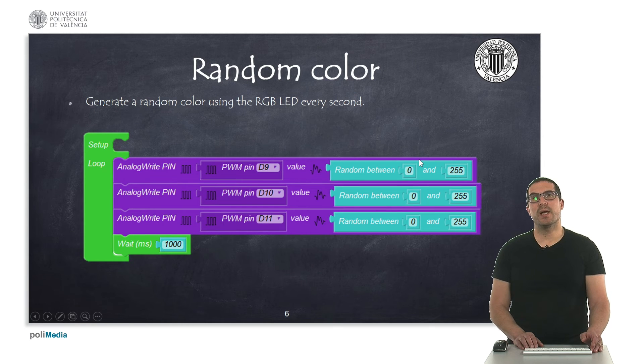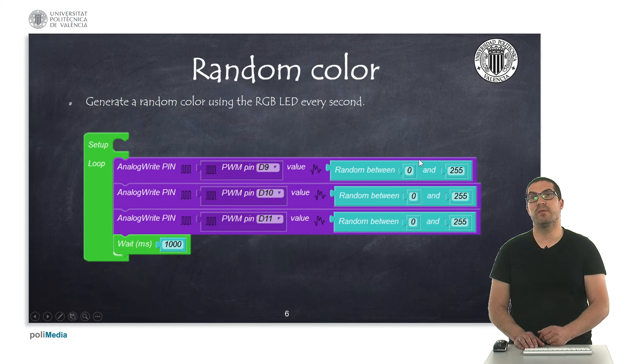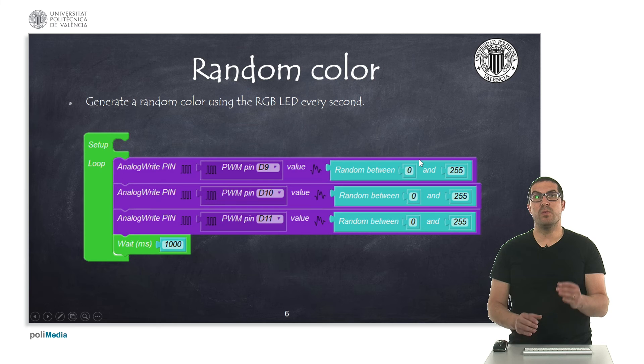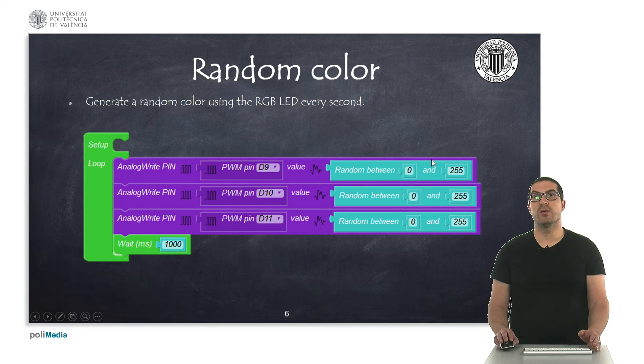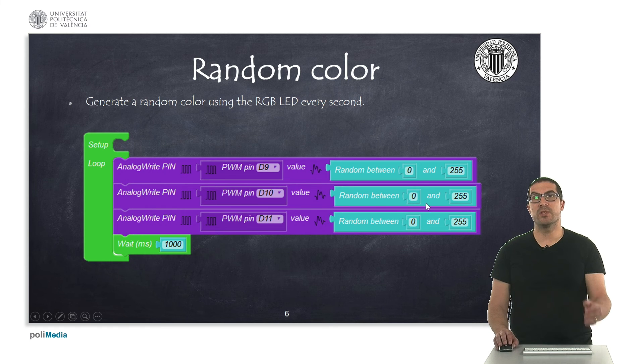Here, what we're doing is setting an analog signal on each of the pins and the intensity for that signal varies, is a number that varies between 0 and 255. With the three channels, red, green and blue, we can generate random colors. And we do that every second.